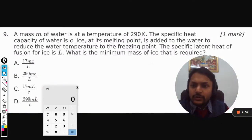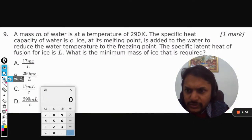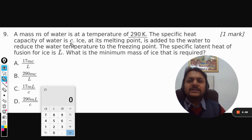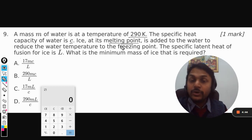Okay dear students, this question was sent to me on Discord by a student. Let's see how to solve this. A mass m of water is at a temperature of 290 Kelvin. The specific heat of water is C. Ice is at its melting point. What is the melting point of ice? The freezing point and melting point are the same thing - zero degrees Celsius. In Kelvin we take it as 273 Kelvin.